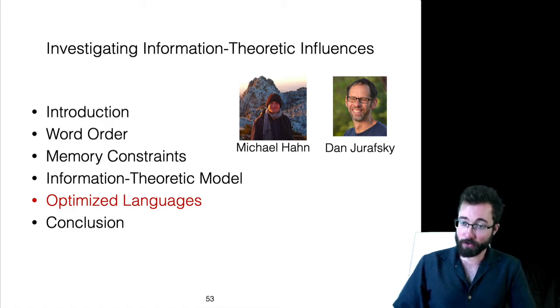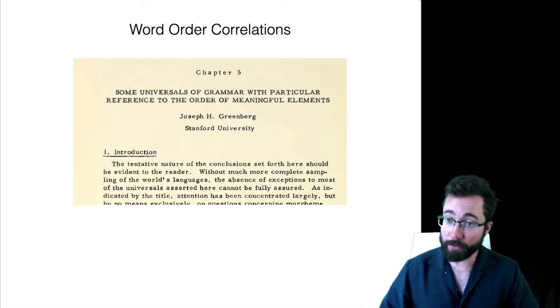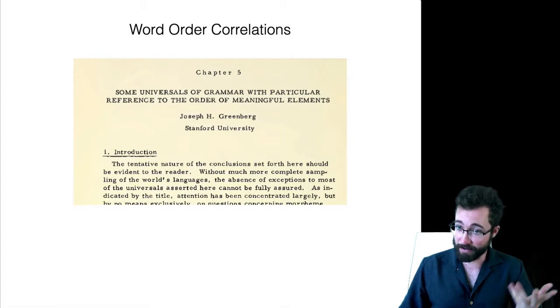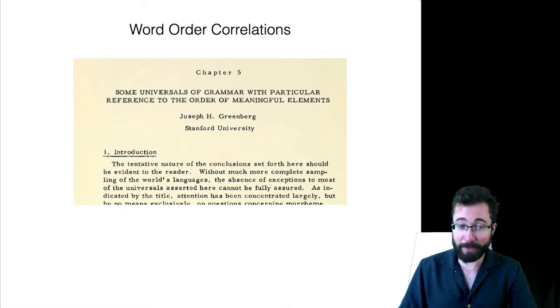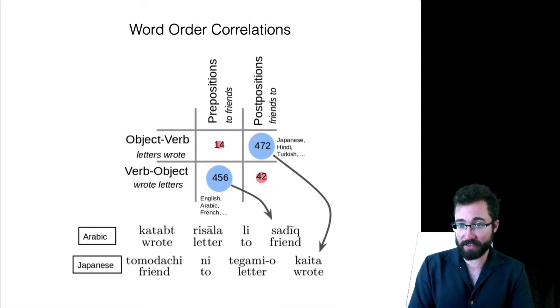Now, last of all, I'm going to walk through a study that was conducted jointly with Michael Hahn and Dan Jurafsky, which ties a lot of these ideas together. What we're going to try to explain here are the Greenbergian word order correlations, or at least a subset of them. What are these correlations? They were pointed out first time in print by Greenberg in the 60s, and they are correlations that are something like this.